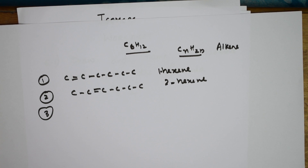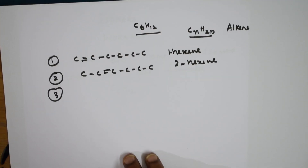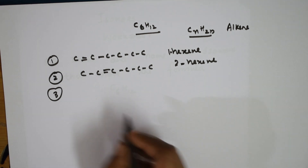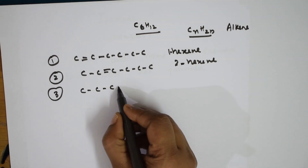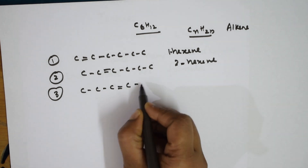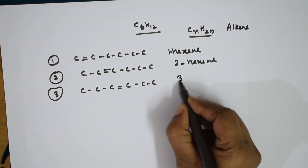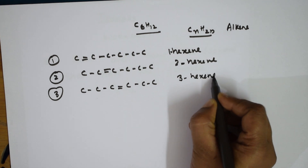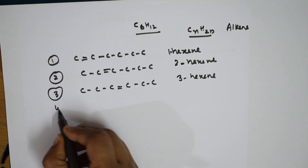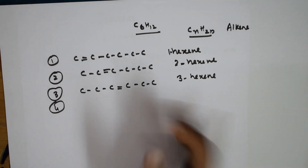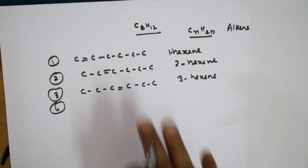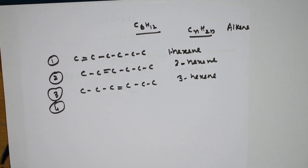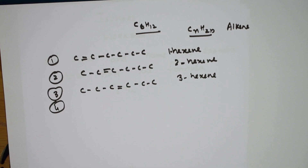Now shift the double bond to the third position: 1, 2, 3 — this is 3-hexene, the fourth isomer. Now all combinations for hexene are over, because whether I shift the double bond from either end, all three are covered. Now I have to be careful and start shifting methyl groups.